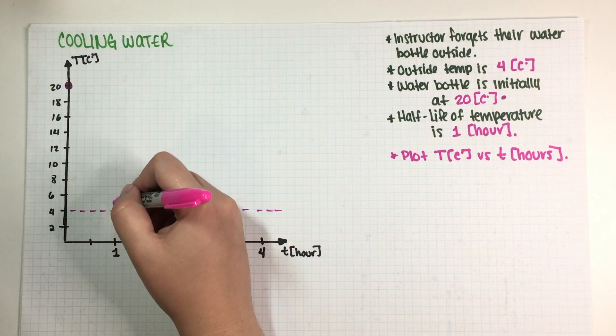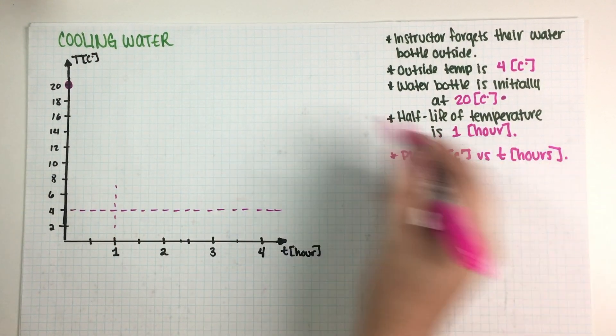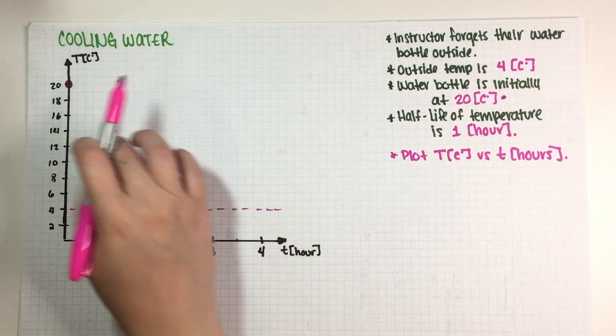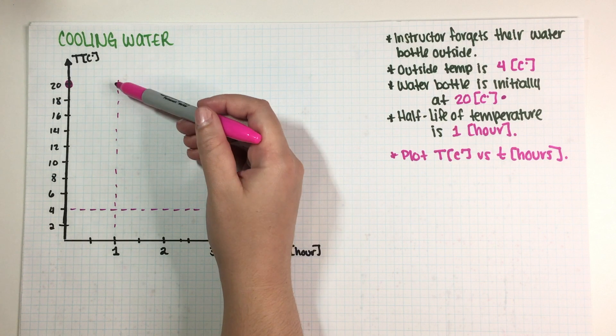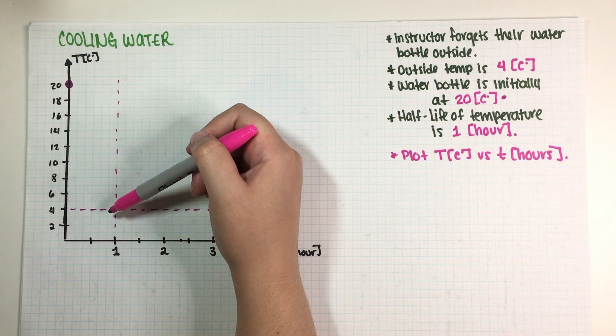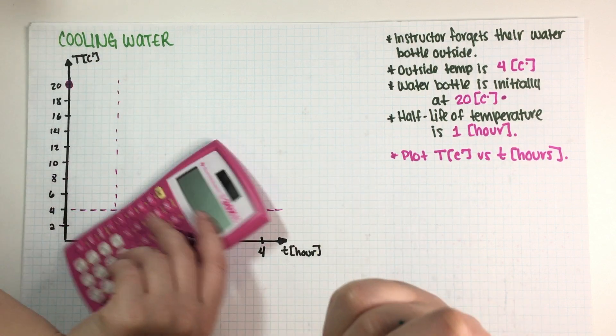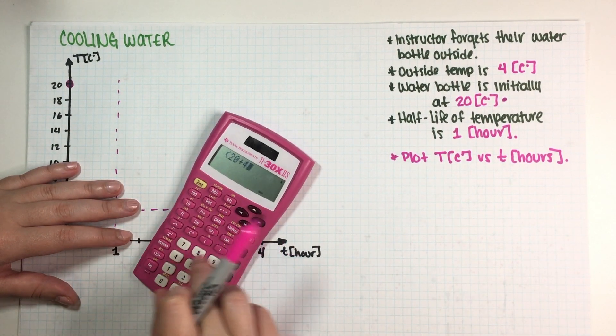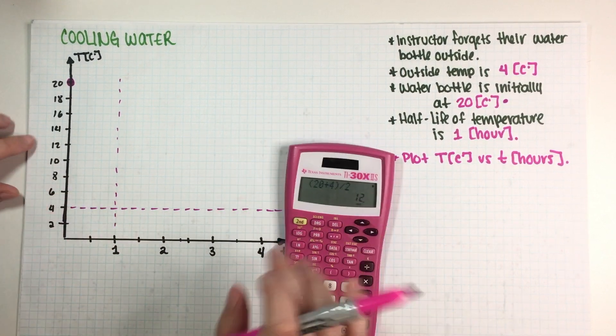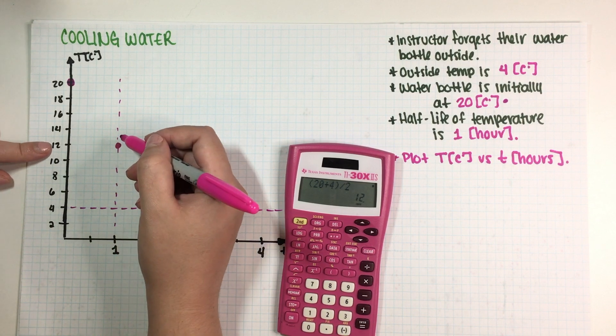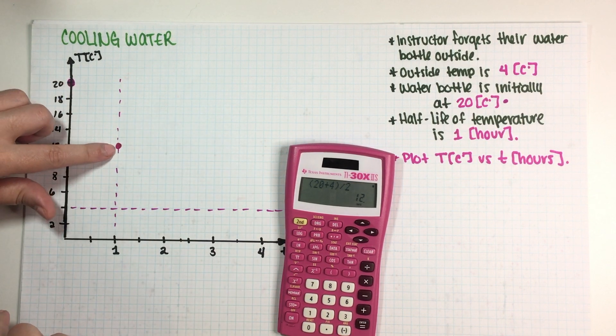So the first half-life is always, well first of all, it's gonna happen over here which is at one, because the half-life is one hour, and the Y value is going to be the middle point between initial and final. So the middle point between 20 and 4, you can just do it as an average, is 12. So at the first half-life you're gonna have a decay after one hour of twelve.